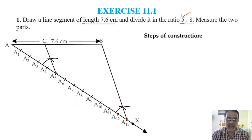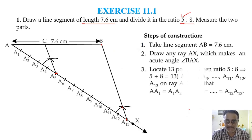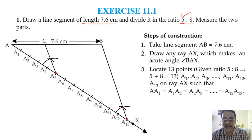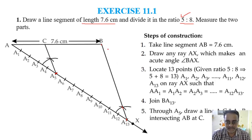So what we did: draw AB equal to 7.6 cm, draw an acute angle, locate 13 equal parts A1, A2 up to A13 such that AA1 equals A1A2 and so on. After that join B to A13. Then through A5 draw a parallel line to BA13, intersecting AB at point C. AC to CB is the required ratio 5 is to 8.